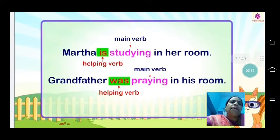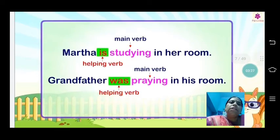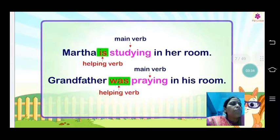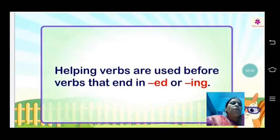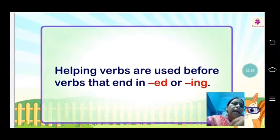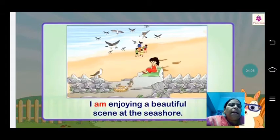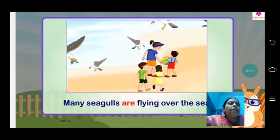Let us see more examples. 'Martha is studying in her room' — here 'is' is used as the helping verb, which is helping the main verb 'studying.' 'The grandfather was praying in his room' — the main verb is 'praying' and it is helped by 'was,' the helping verb. Helping verbs are used before verbs ending in -ing or -ed. For example, 'She has climbed the mountain' — 'has' is the helping verb and 'climbed' is the main verb.